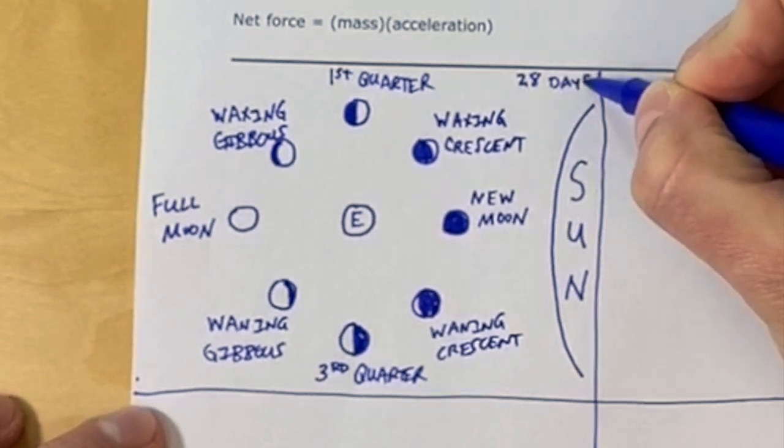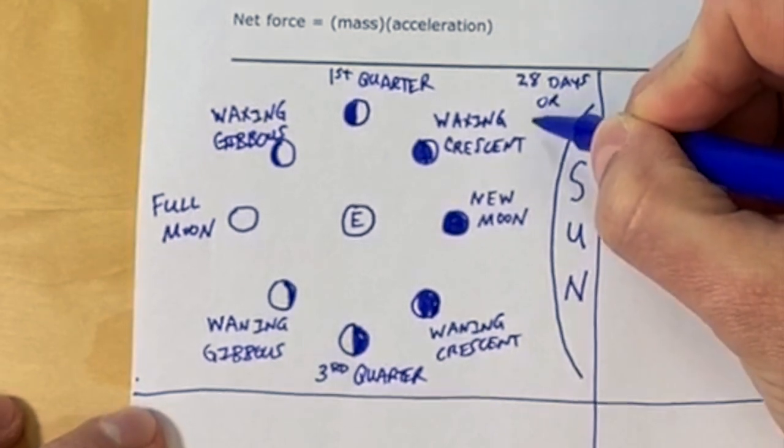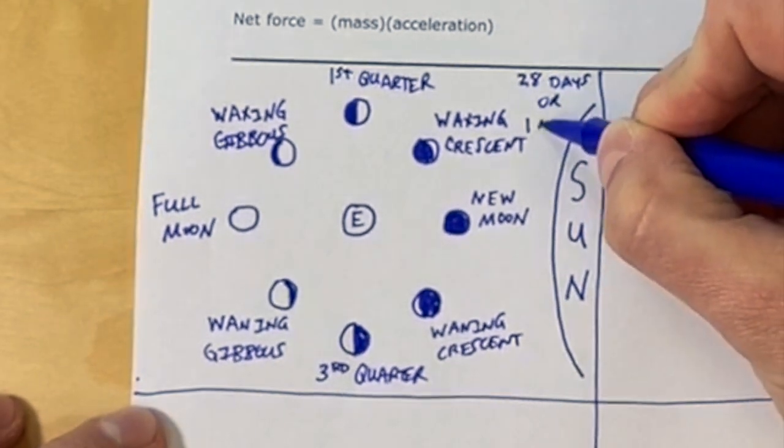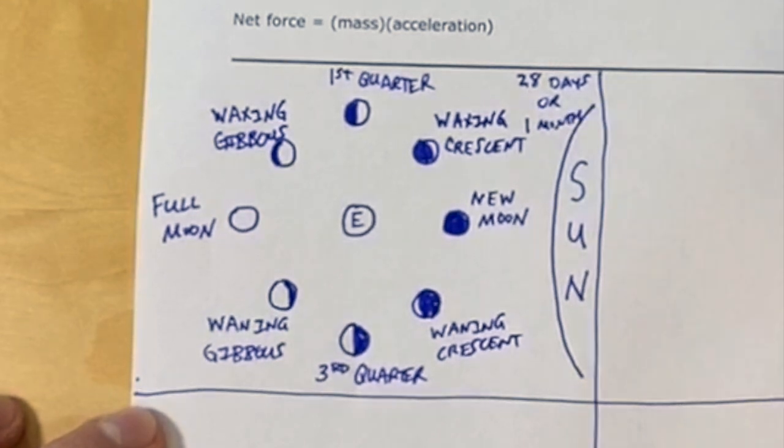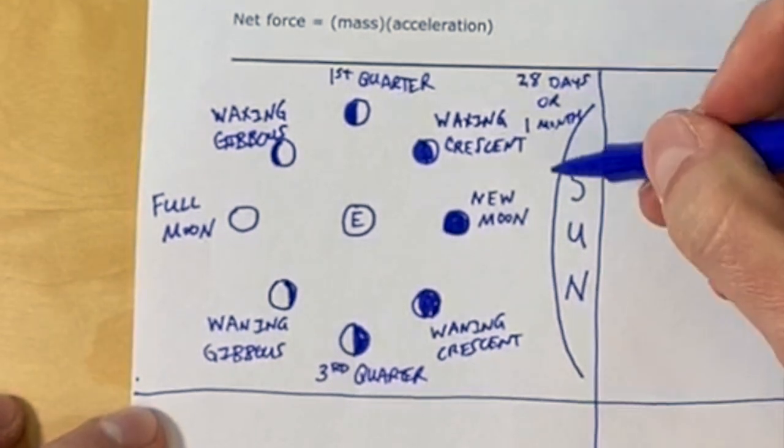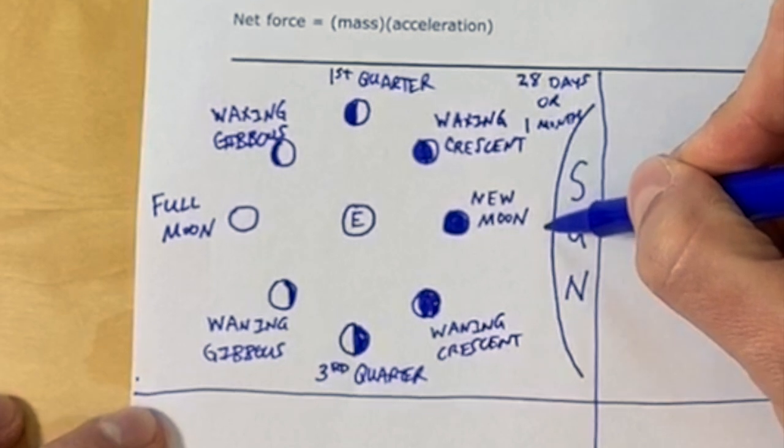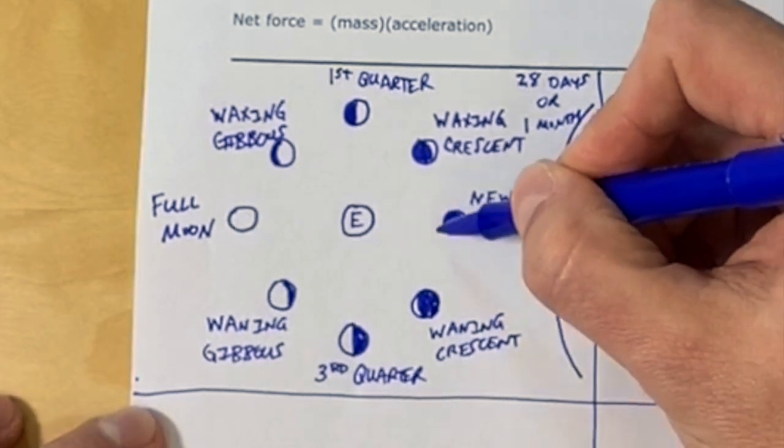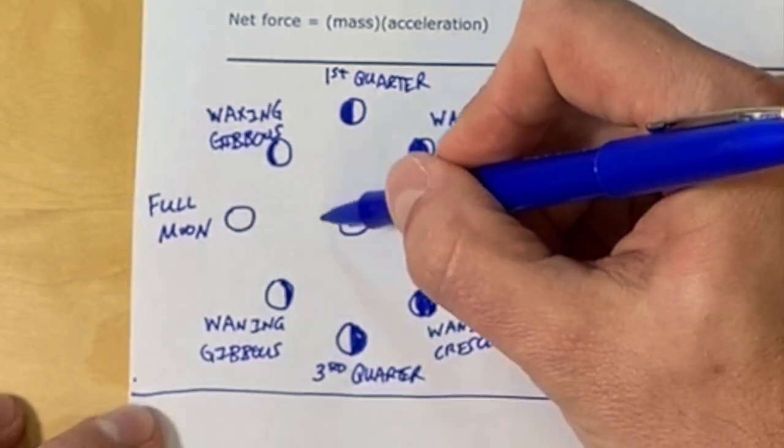And the new moon all the way back around to the new moon again is about 28 days, roughly 28 days, not quite a month. So between each major moon phase is about three and a half days, and then it's a week between new and first and so forth.